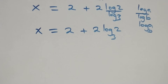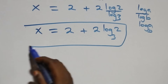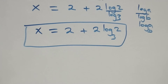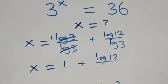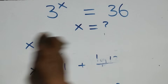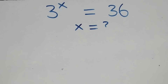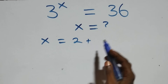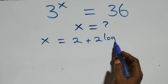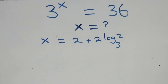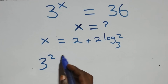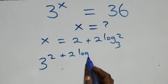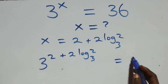We have the value of x as x equals to 2 plus 2 log 2 base 3. We can also verify: x equals to 2 plus 2 log 2 base 3 gives us 3 raised to the power x equals to 36.